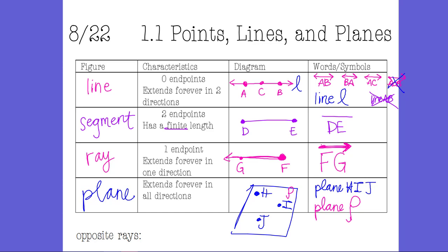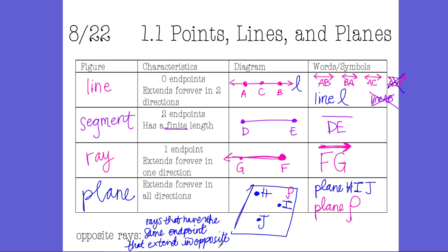One thing we forgot to put on your chart is opposite rays — go ahead and add that to your notes. Opposite rays are rays that have the same endpoint and extend in opposite directions. So let's say I have ray BA — B is my endpoint and it extends in the direction of A. If I also have ray BC over here, ray BA and ray BC are opposite rays. They share endpoint B; ray BA extends to the left, ray BC extends to the right, pointing in opposite directions.